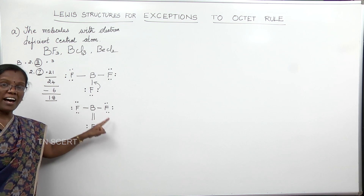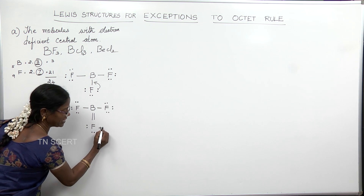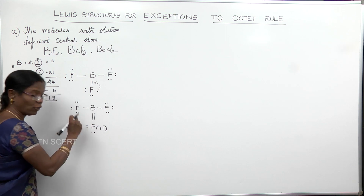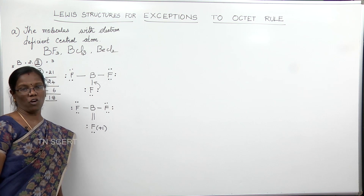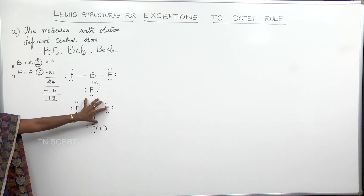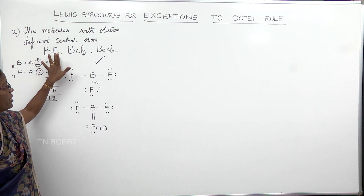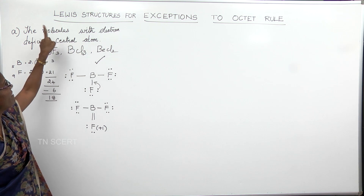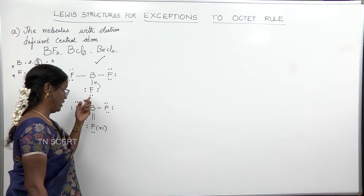However, this double bond structure is not acceptable. When formal charges are calculated, the fluorine forming the double bond gets a formal charge of +1. Since the more electronegative atom should not carry a positive formal charge, this structure is rejected. Therefore, the best structure for BF₃ is the one where boron has an incomplete octet, making BF₃ an exception to the octet rule.